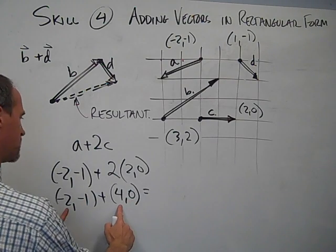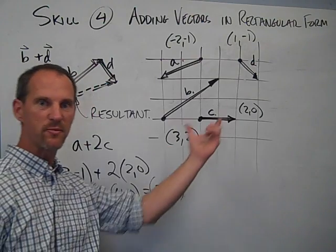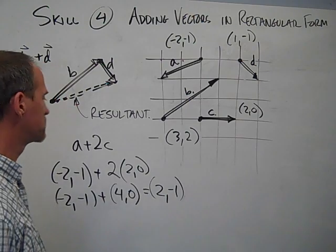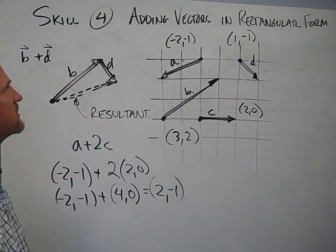2, negative 1. And if I were to pick the arrowheads up and put them down, tail to head like I'm supposed to, you'll see that that's the same thing. Okay, so that's adding vectors in rectangular form.